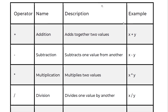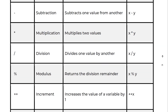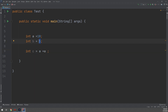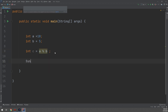The arithmetic operators are: addition using the plus sign, written as x plus y; subtraction as x minus y; multiplication using the star symbol; division using the forward slash, which divides one value by another; and modulus using the percentage sign, which returns the division remainder — written as x percent y. Let's take a quick example of modulus: we write a percent b and print c.